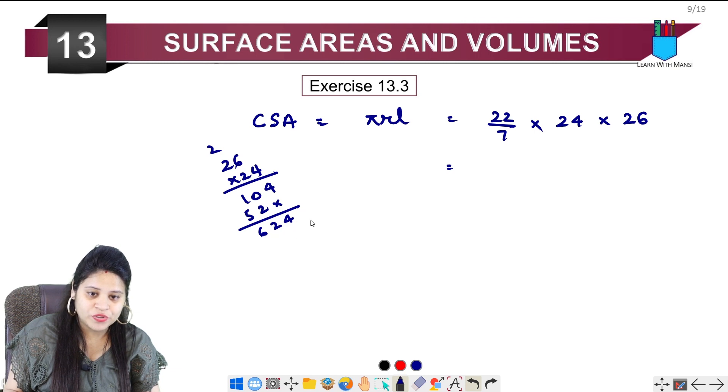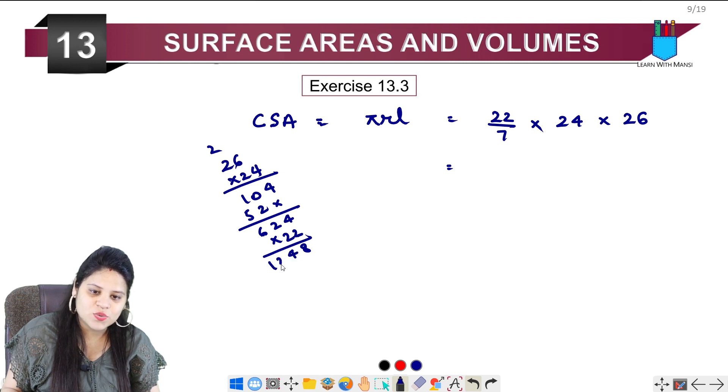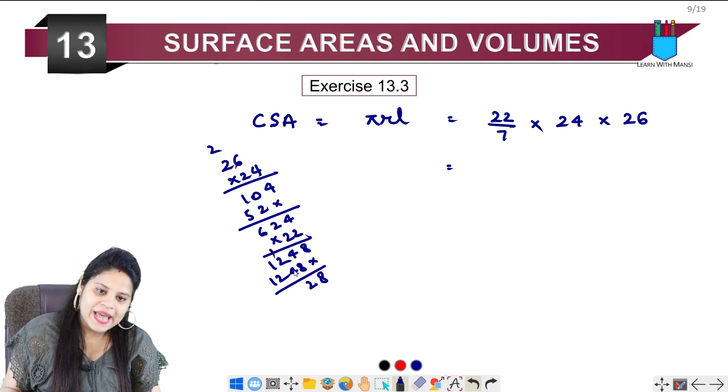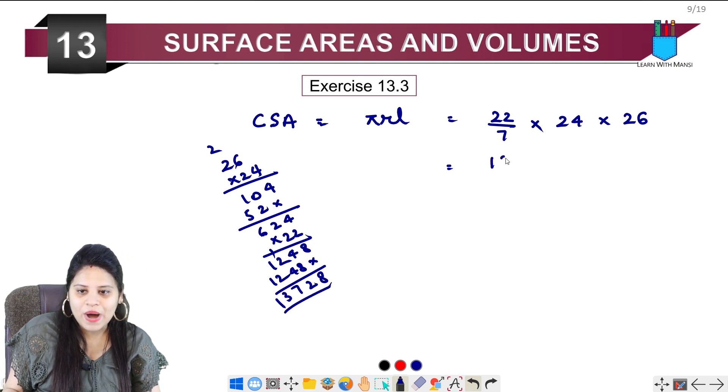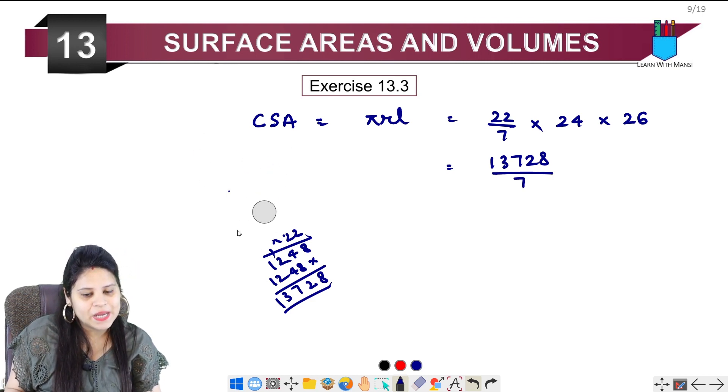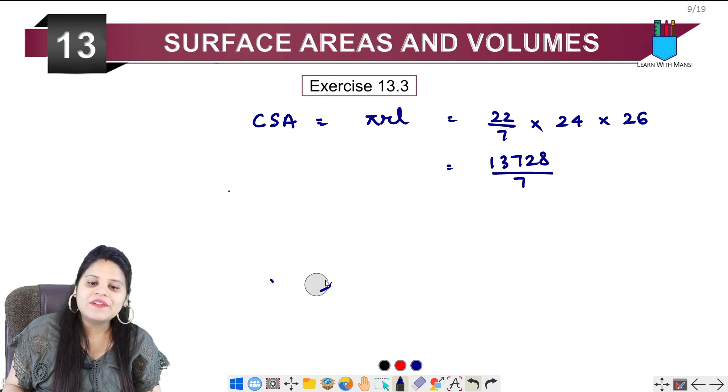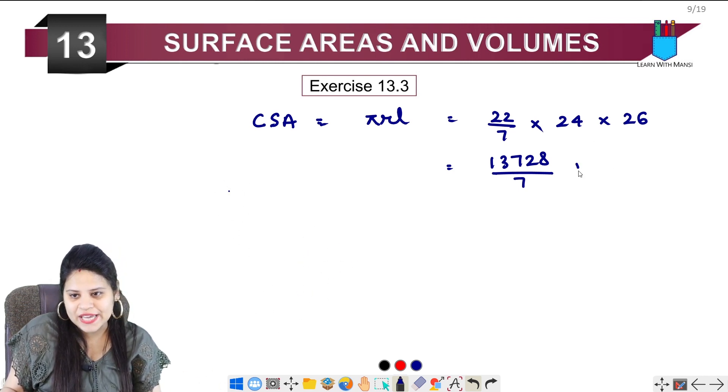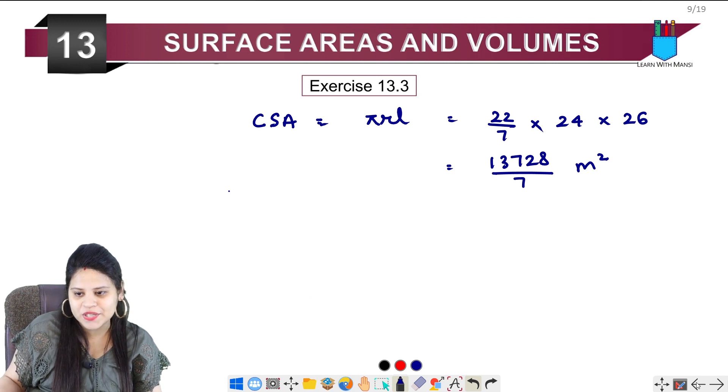Now we multiply 624 by 22. 4 times 2 is 4, 2 times 6, 2 is 12, again 2 is 2, 1, 2, 4, 8. Then 8, 8, 9, 10, 11, 12, and 4, 5, 6, 7, and 2 plus 1 is 3. So we have 13,728 upon 7. If you want to divide it, you can find the curved surface area. Otherwise, we will leave it here for now. The curved surface area has been found. Now the cost.